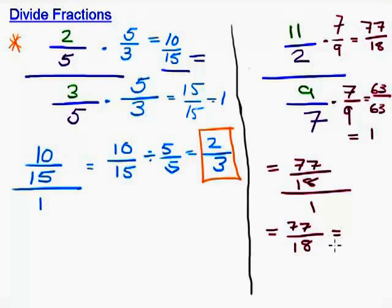For some extra practice with improper fractions, let's go ahead and convert that to a mixed number. 18 goes into 77 four times. 18 times 4 is 72. So 77 minus 72 is 5. So we're left with 4 and 5 eighteenths as our answer.